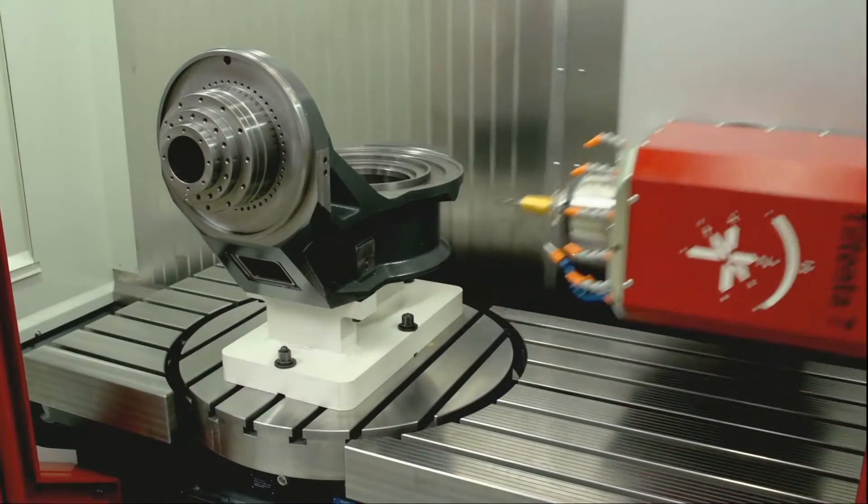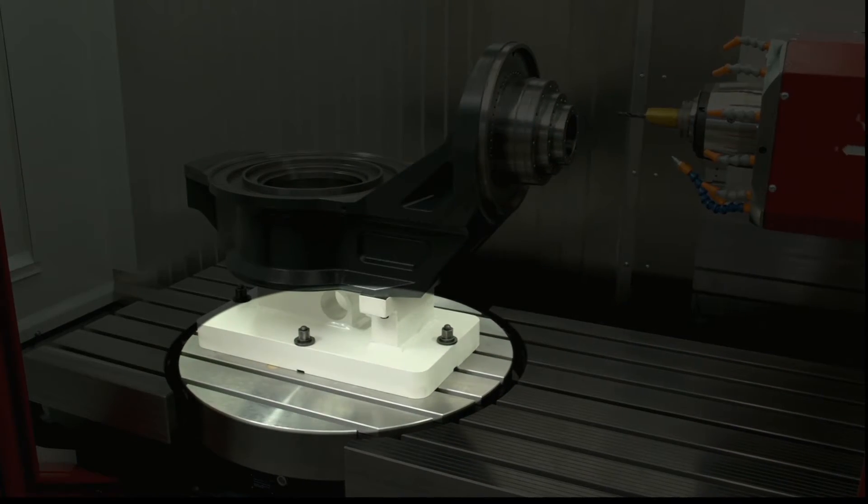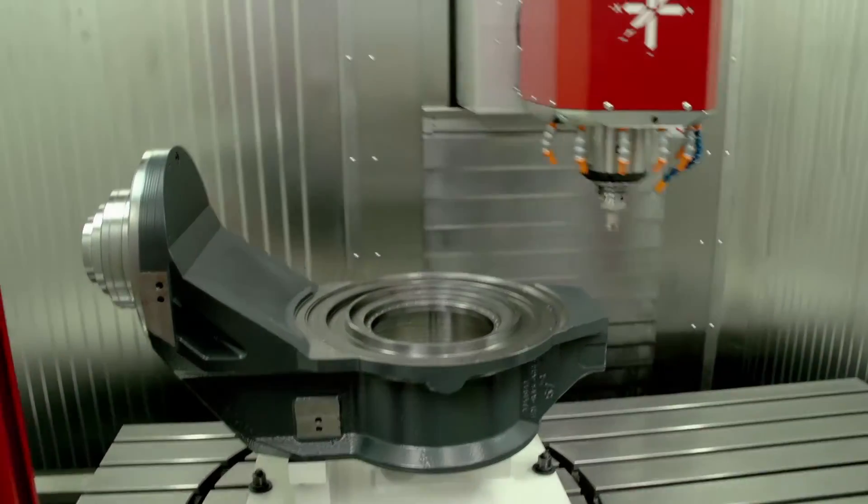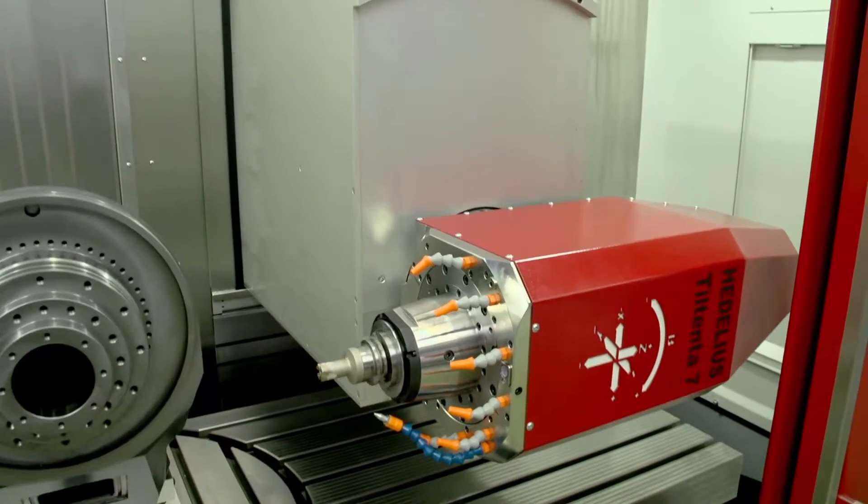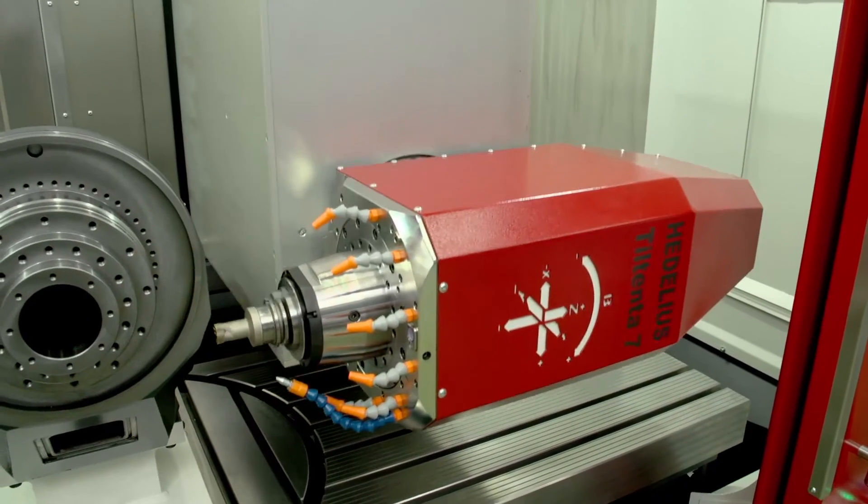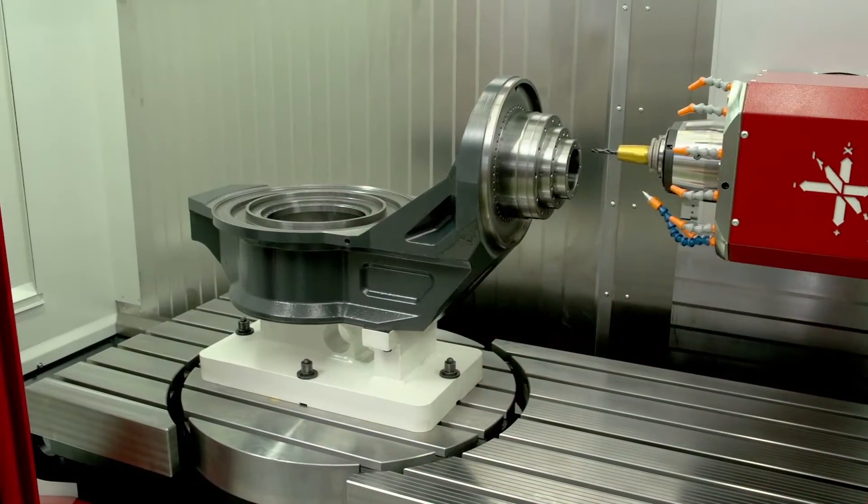The heavy-duty NC rotary table, integrated into the machine table to form a level surface together with the infinitely pivotable main spindle, enables high-performance 5-axis processing of workpieces up to a clamping weight of 1200 kg and a diameter of 1100 mm.